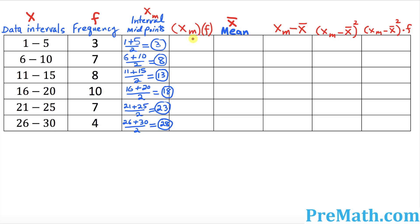The next fourth column is where we multiply. This third column is represented by x-sub-m, meaning the midpoints. So we multiply each x-sub-m by its corresponding frequency. 3 times 3 is 9; 7 times 8 is 56; 13 times 8 is 104; 10 times 18 is 180; 7 times 23 is 161; and 4 times 28 is 112.